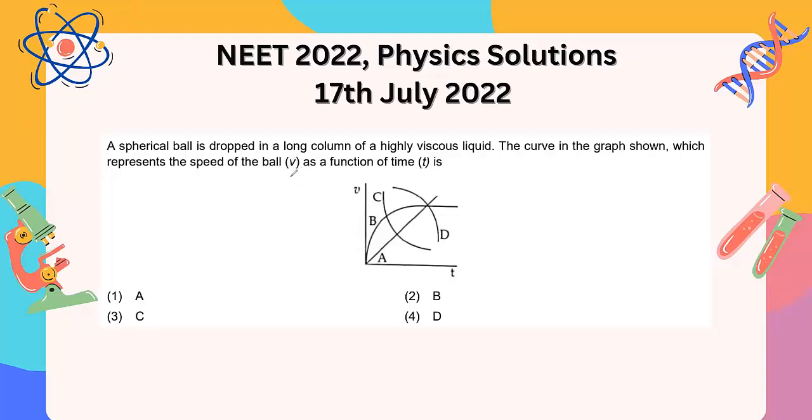A spherical ball is dropped in a long column of a highly viscous liquid. The curve in the graph is shown and you have to select the graph that will represent the speed of the ball v as a function of time. So we have a column with some fluid or liquid filled in it, and a ball is dropped in this column.